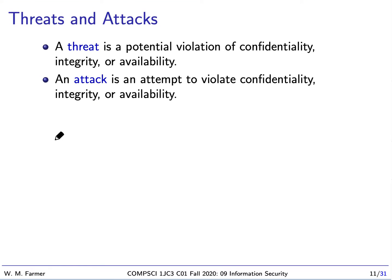We're interested in learning about information security. One of the basic questions is: what are the threats and what are the possible ways of attacks? A threat is any potential violation of confidentiality, integrity, or availability. An attack is an actual attempt to violate confidentiality, integrity, and availability. An important part of information security is identifying what the threats are and preventing attacks.